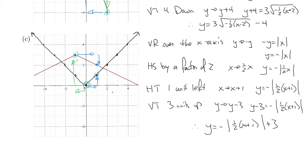Those are the transformations I'm seeing in that graph. I hope that gives you a little bit of a template to follow. If you just go systematically — look for those that are the result of multiplication, deal with the negative stuff separately from the stretches, and then find that anchor point to identify the translations — it's a fair bit simpler.